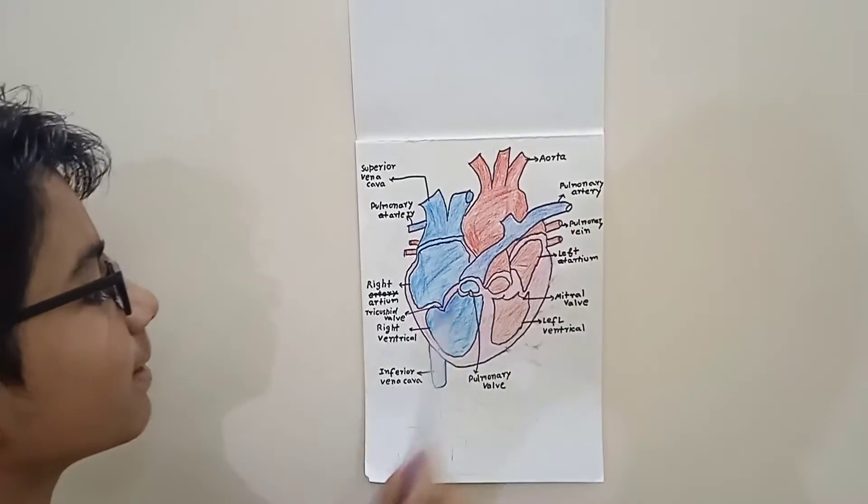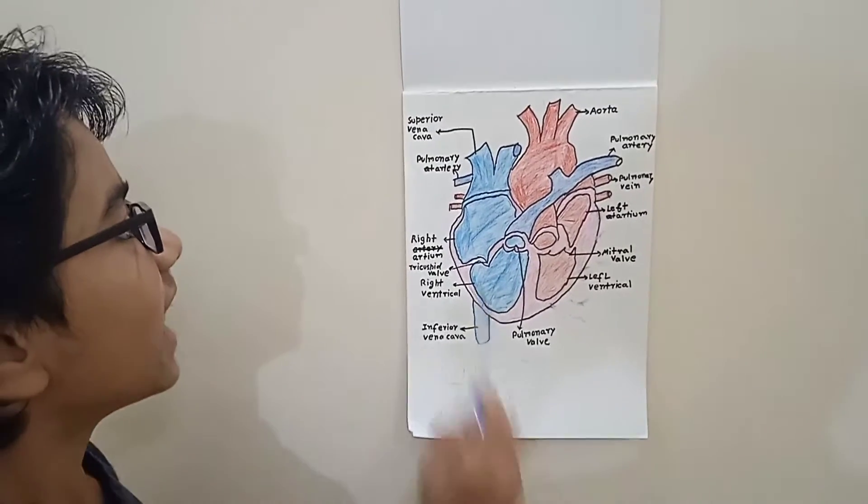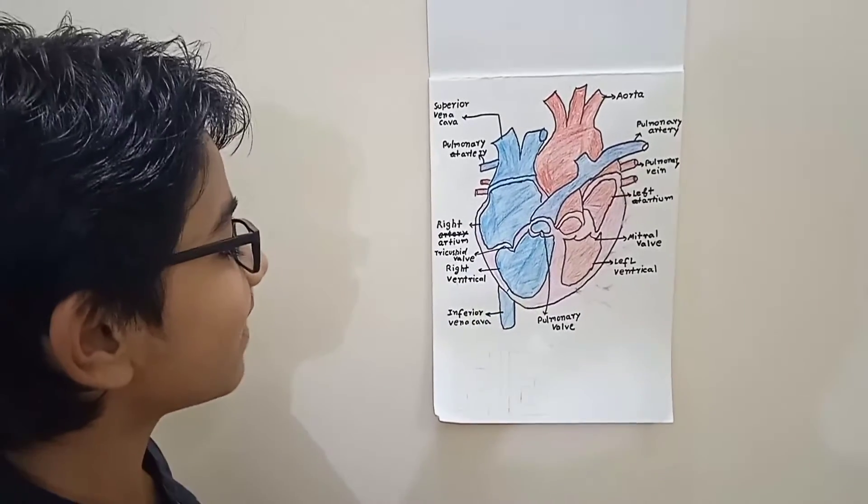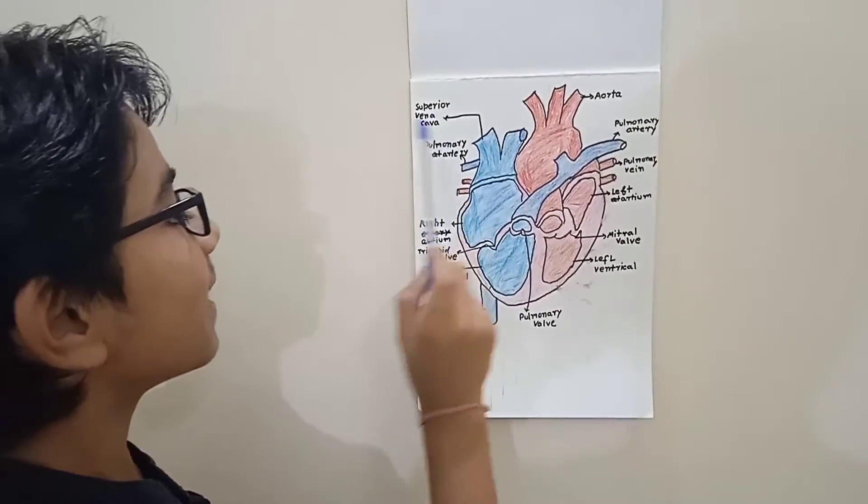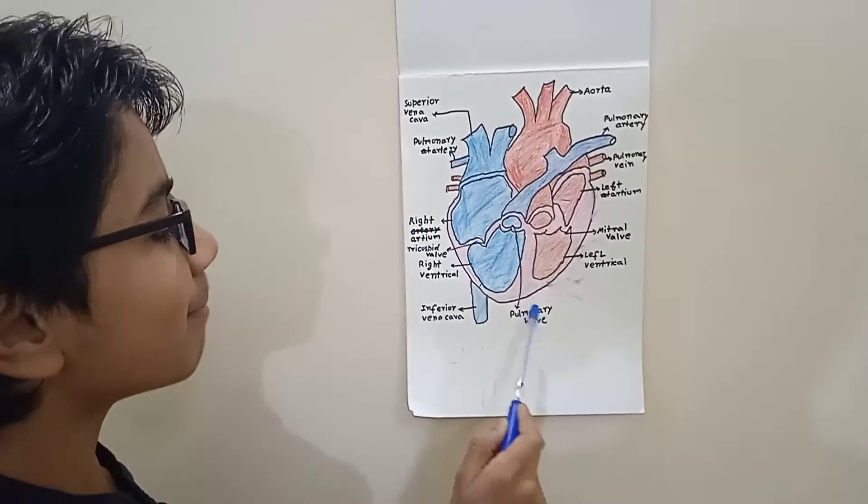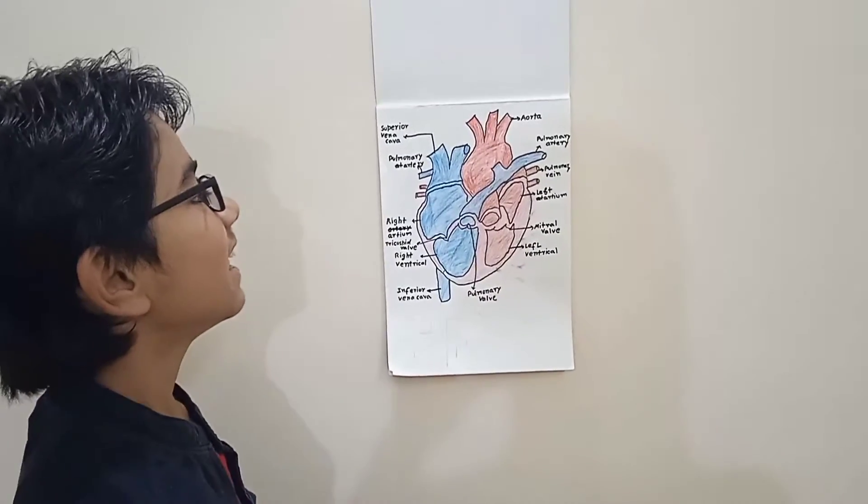And this is superior vena cava, this is inferior vena cava, this is pulmonary artery, this is tricuspid valve, this is pulmonary valve, this is pulmonary artery and this is pulmonary vein and this is mitral valve.